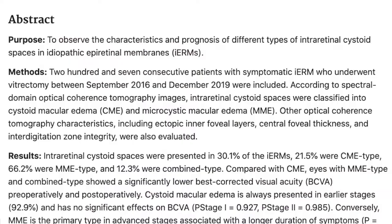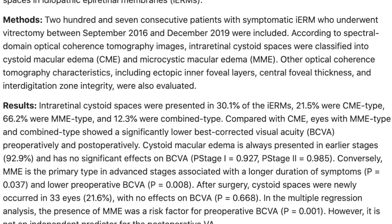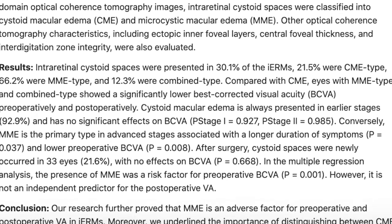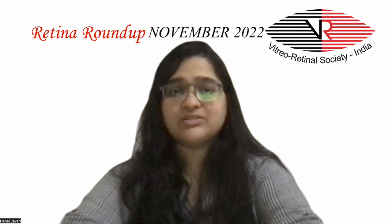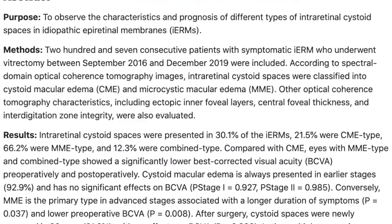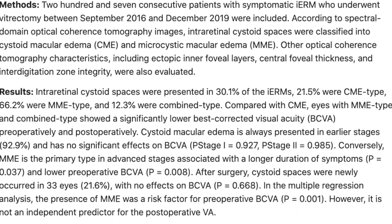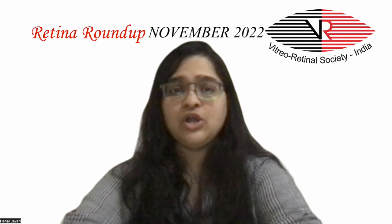Microcystic macular edema does not cause an increase in macular thickness. 21.5% of the eyes had CME type of edema, while 66.2% had MME type and 12.3% had combined type. Cystoid macular edema presented in earlier stages and had no significant effect on best corrected visual acuity. Microcystic macular edema was the primary type seen in advanced stages and was associated with a longer duration of symptoms. Both MME type and combined type showed significantly lower best corrected visual acuity pre-operatively and post-operatively.